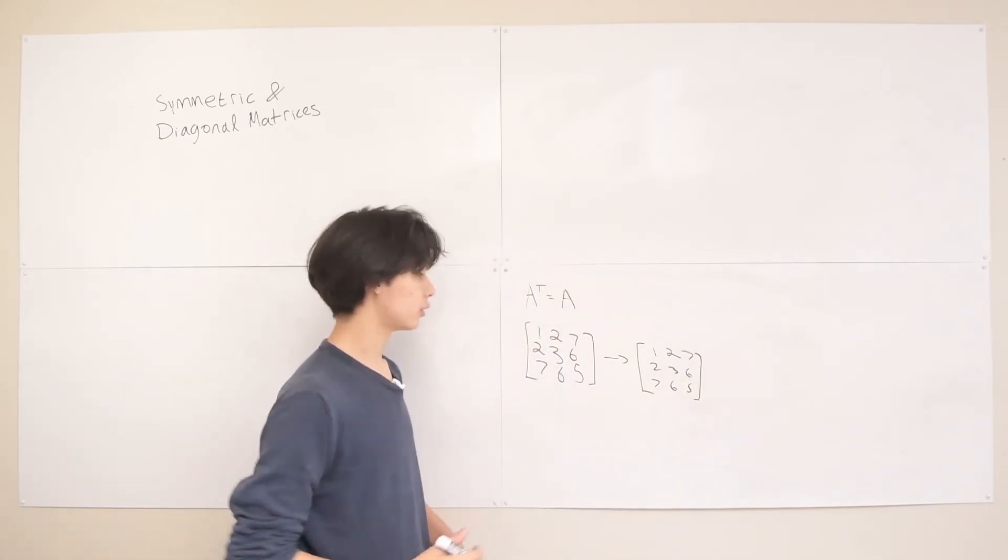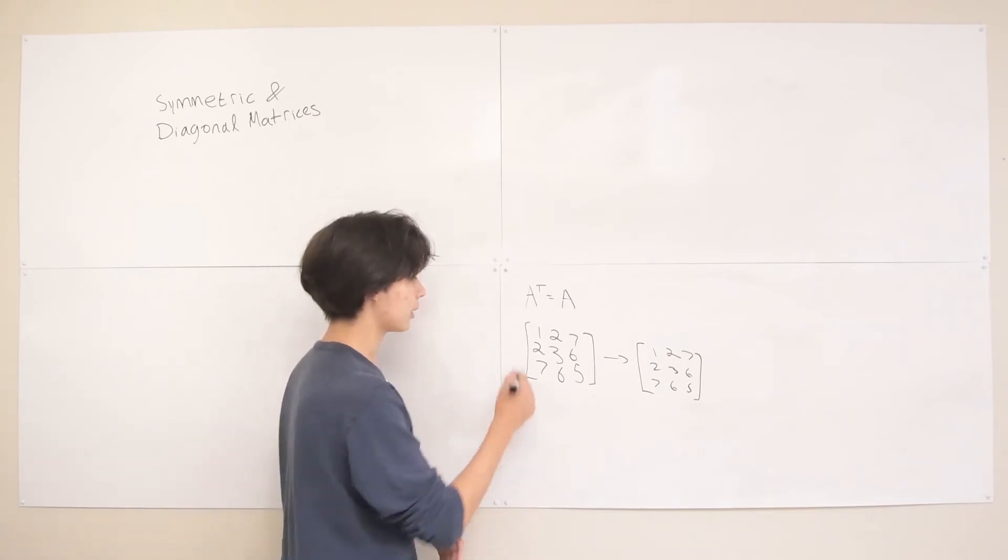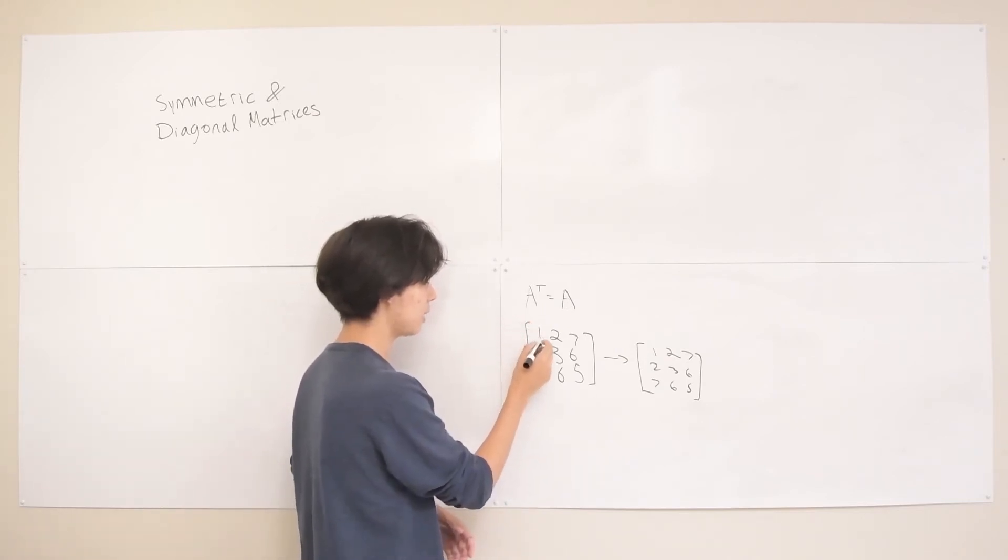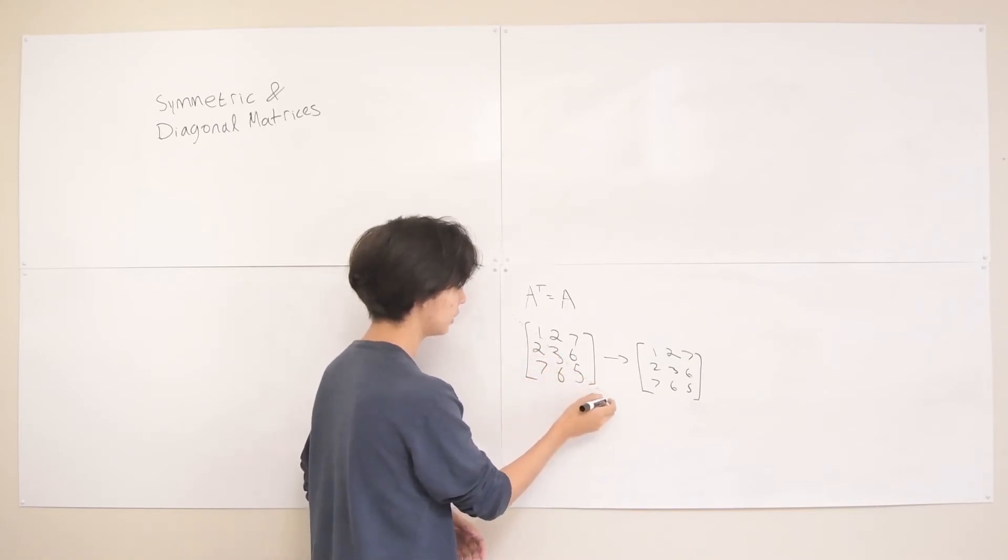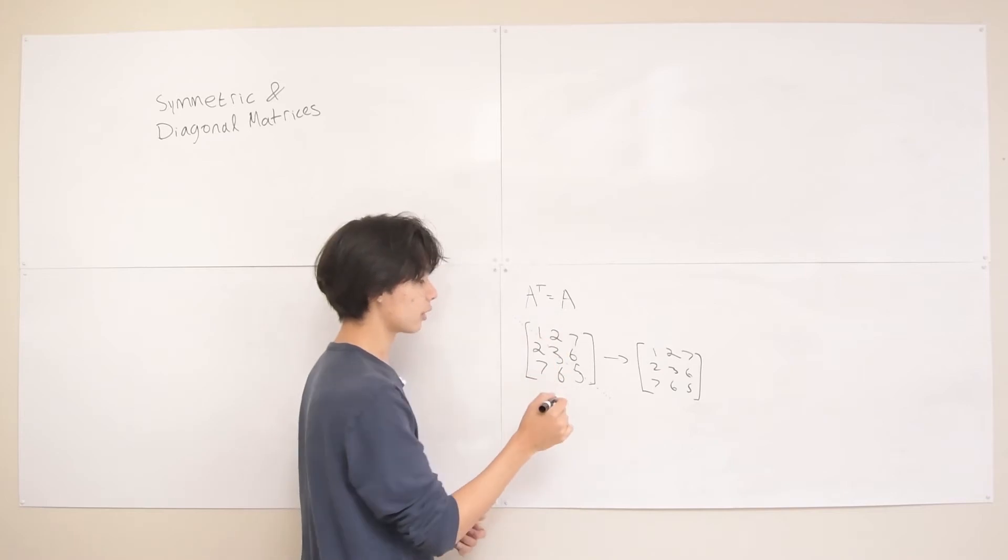The reason why and the way you can kind of identify symmetric matrices, just by looking at the matrix A, is if you put a main diagonal across this matrix from left to right, up to down, then you can see that the elements are mirrored across this diagonal.